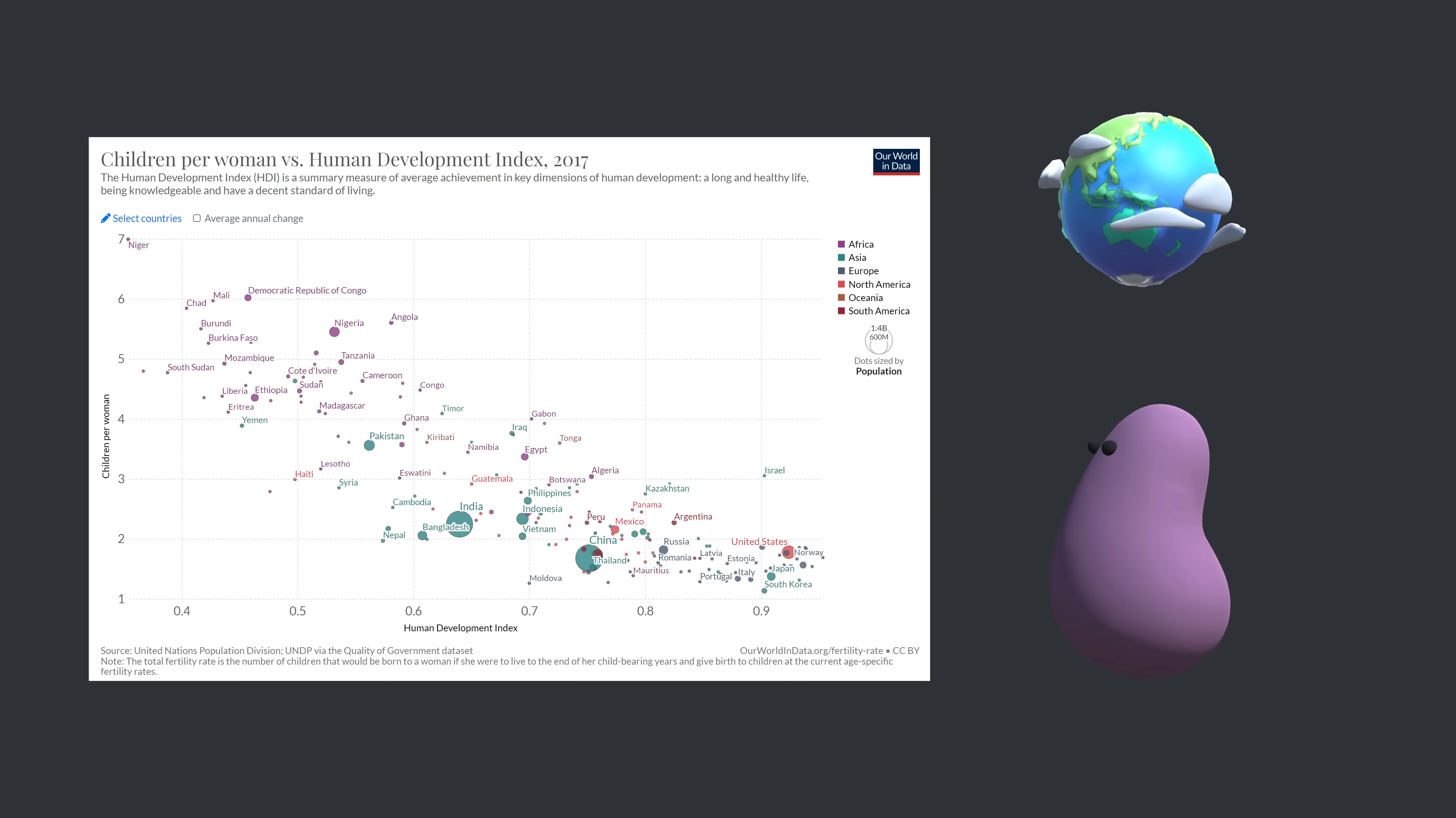As countries improve in life expectancy, education, and income, their birth rates tend to drop close to two children per woman, keeping the population steady rather than growing it. So as the world continues to develop in these ways, it seems likely that the pattern of stable populations will become widespread. And our population will be steady with no war, famine, or supervillains necessary.